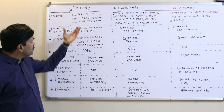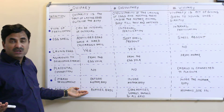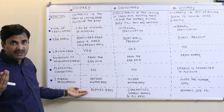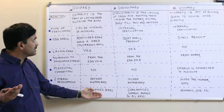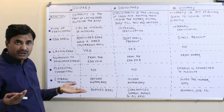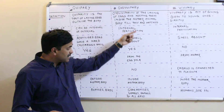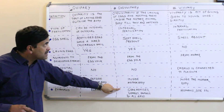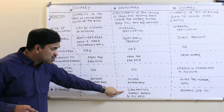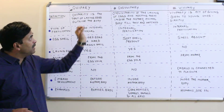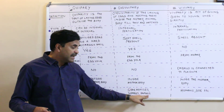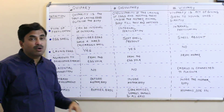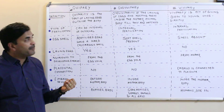Examples of oviparous organisms are reptiles and birds — all have a hard calcareous shell around their eggs. Examples of ovoviviparous organisms include some reptiles (not all — generally reptiles are oviparous, but some are ovoviviparous), sharks, some snakes, and all rays.